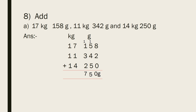Now, we add 7, 1, and 4. 7 and 1 is 8, and 8 and 4 is 12. Write 2 here and 1 carry over. Now, we add 1, 1, and 1 plus the carry. 1 plus 1 is 2, 2 plus 1 is 3, and 3 plus 1 is 4. So, the answer is 42 kilograms 750 grams.